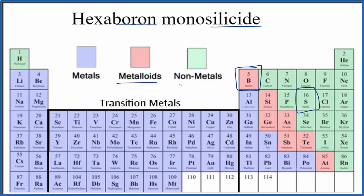So when we have a metalloid and a non-metal, we're going to treat this as a molecular compound. That means we need to think about these prefixes when we write the formula for hexaboron monosilicide.